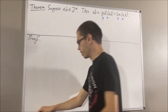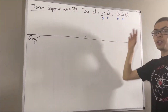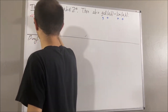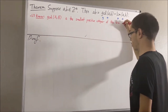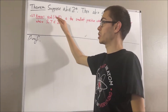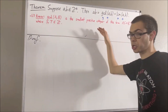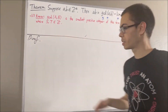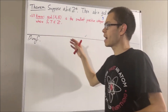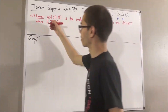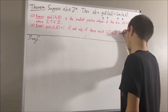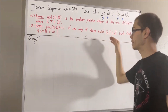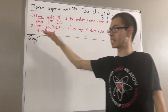In proving this theorem, we're going to use two facts regarding greatest common divisor. The first fact: the greatest common divisor of A and B is the smallest positive integer of the form AS plus BT, where S and T are integers. A fact which follows from this is: the greatest common divisor of A and B is equal to one if and only if there exist integers S and T such that AS plus BT is equal to one.